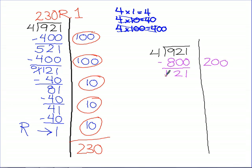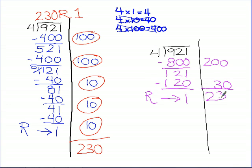And guess what I noticed? Some people didn't go 10 at a time — they didn't take out 40 and then another 40 and another 40 forever. Instead, they took out three sets of 40, which makes 120. In order to make three sets of 40, we need 30 times 4 — if 4 times 10 is 40, then 4 times 30 is 120. Then we end up with 1, and you can't take any more out, so that's our remainder. When we add these up, we get 230 — a quotient of 230 with a remainder of 1. You are officially masters of partial quotient division. Congratulations!